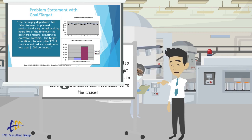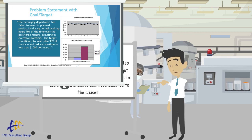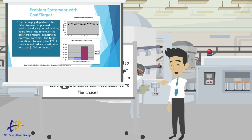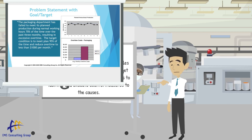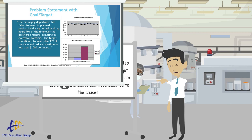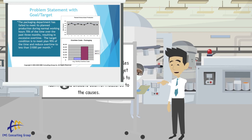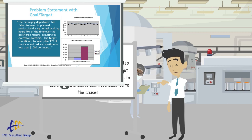This problem statement is fairly well stated. We have a chart that illustrates our failure to meet target on a consistent basis, and we also have a chart that shows the overtime costs, which describes the impact of the problem.